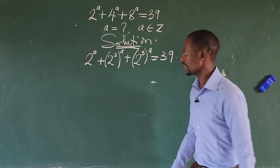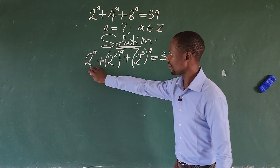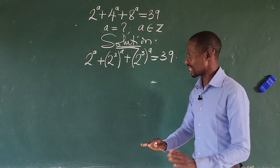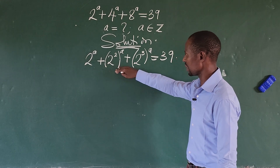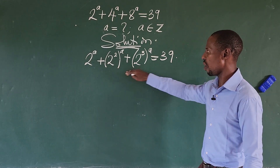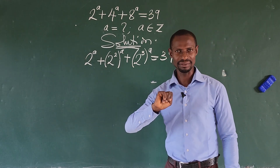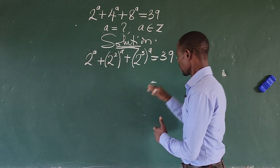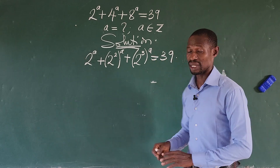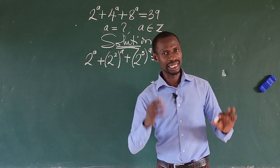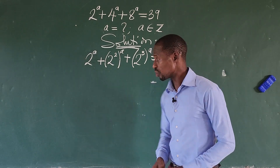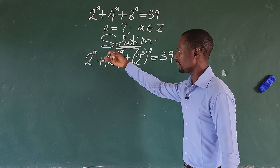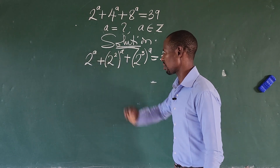Now, if you look carefully, here we are having 2 to the power of a. So we want to strike a balance whereby we have 2 to the power of a in all the quantities on the left-hand side. So let's fully express everything in terms of 2 to the power of a.